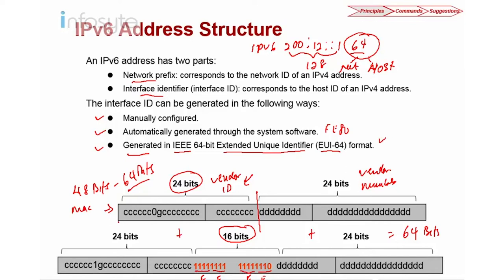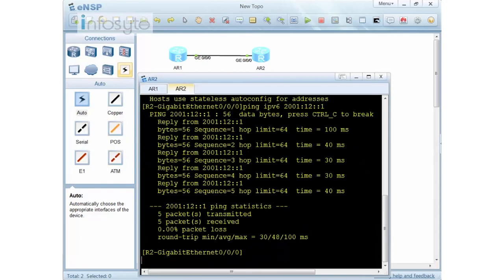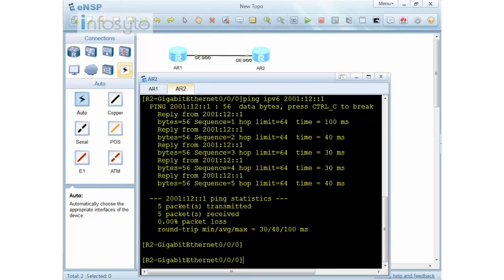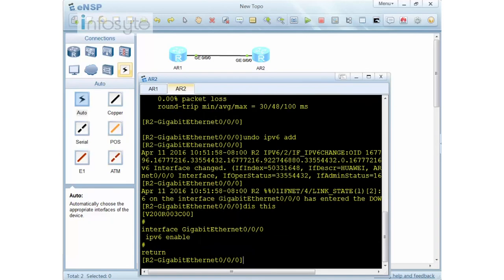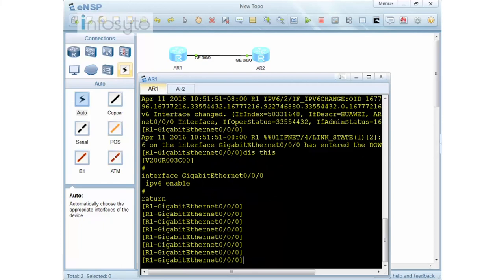Let me give you one example back in my lab. I'm going to remove the addresses on both routers. You can see that I only have IPv6 enabled but no addressing. To configure the IP address using EUI-64, I just need to specify the network prefix — I only specify the network portion, not the host ID.